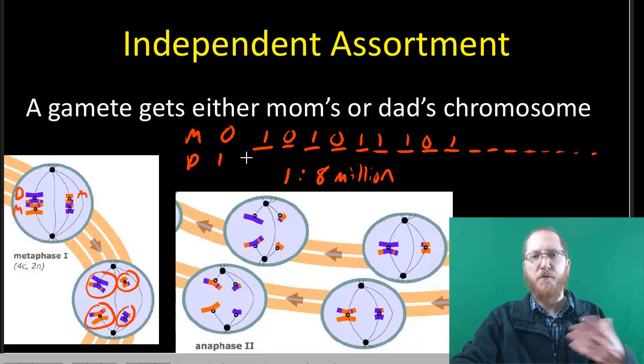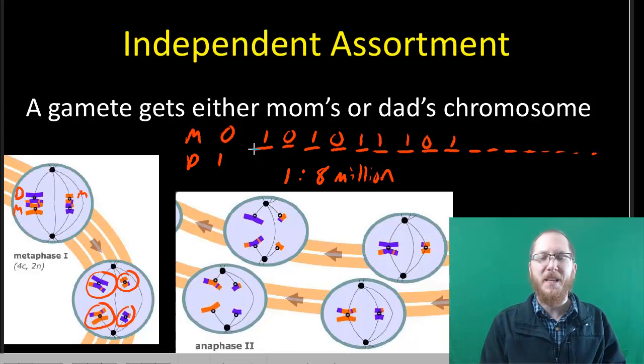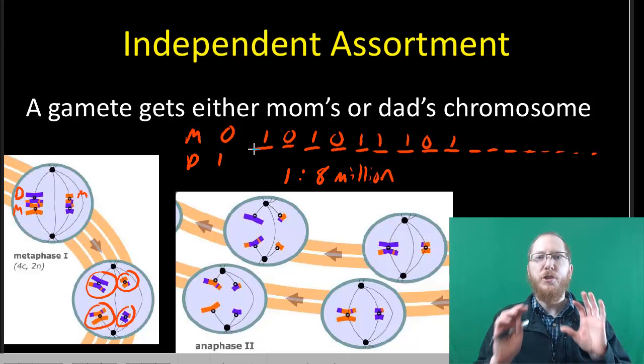Now granted, this number will be a lot smaller if it's something like a fruit fly that only has 4 chromosome types. But this could also be a lot bigger if you've got something like a plant that might have over 100 chromosome types. So there's going to be a lot of diversity just from independent assortment.